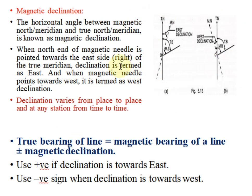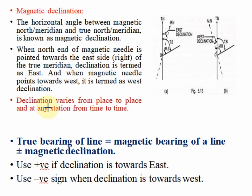Magnetic declination: the horizontal angle between the magnetic north and the true north is known as magnetic declination. When the north end of the magnetic needle points towards the east side of the true meridian, it is called declination towards the east. When it points towards the west, it is called declination towards the west.